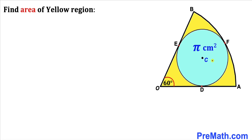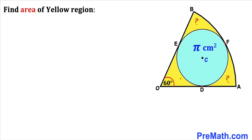In this video we have a blue circle inscribed in a sector OAB, where the center of the sector is O and the center of the blue circle is C. The area of this blue circle is π centimeter square, and angle AOB is 60 degrees. We are going to calculate the area of the yellow shaded region.